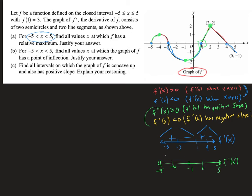The slopes are positive from -5 to -4, negative from -4 to -1, positive from -1 to 2, and negative from 2 to 5. Because this is the second derivative, when we look at the original function, these tell us concavity — so the function is concave up, down, up, down across those intervals.